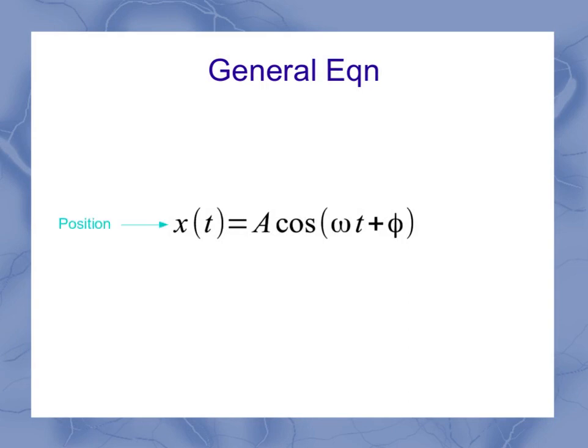x is my position of the oscillator, and notice it's a function of t, because t is my time variable. So at different times, I'll be at different positions. A stands for the amplitude, omega is the angular frequency, and phi is the phase.